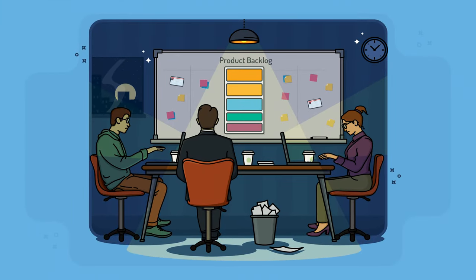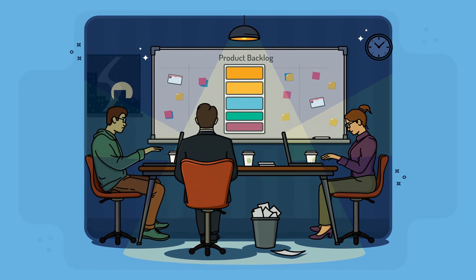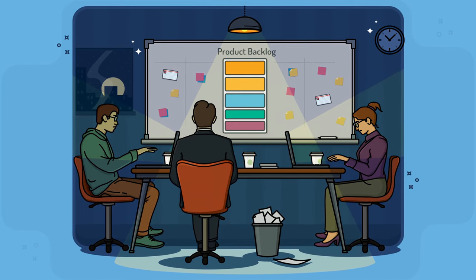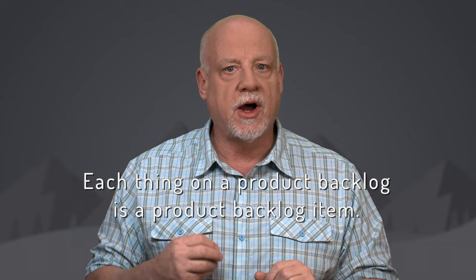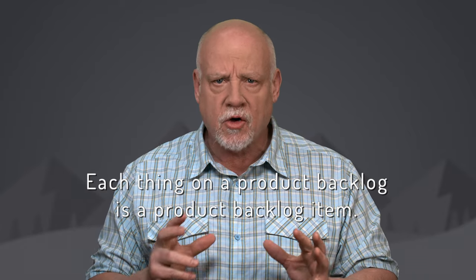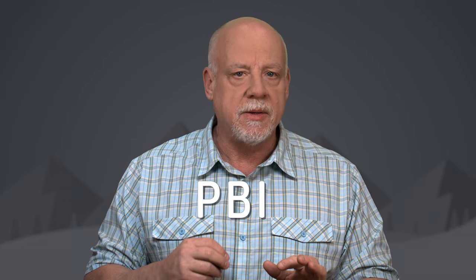Most Agile teams have what they call a product backlog, using a term introduced by Scrum. At its simplest, a product backlog is a list of things to add to or improve in a product. A product backlog comprises product backlog items — each thing on a product backlog is a product backlog item. Since that's a mouthful to say or a lot of characters to type, you'll see it often abbreviated as PBI.